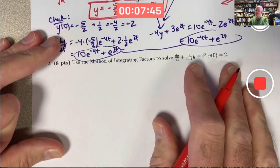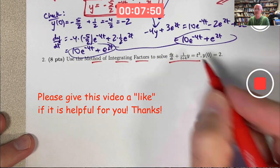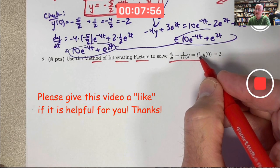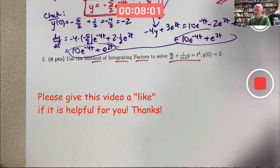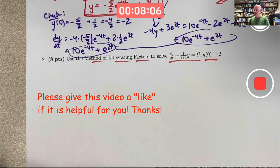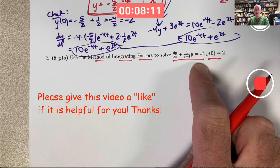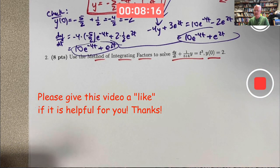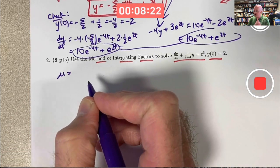On to the next problem. This one says to use the method of integrating factors to solve this differential equation. This is also a linear non-homogeneous equation — non-homogeneous because of the t cubed. It's linear in y; this non-linearity is in the t, but this is still a linear differential equation. We also have an initial condition. If it was not written in this form to begin with, we'd want to bring the y term over to this side before we use the method of integrating factors.